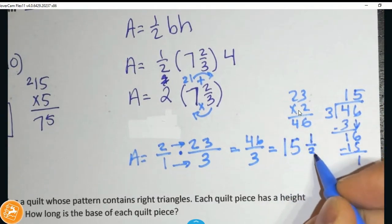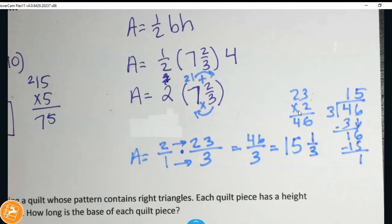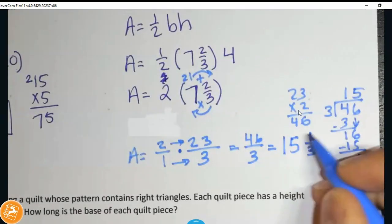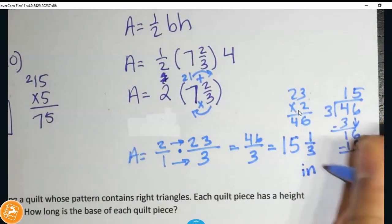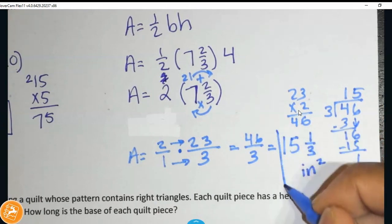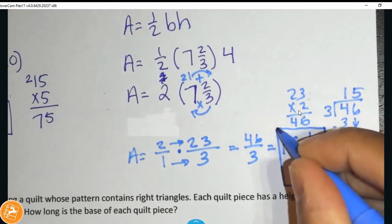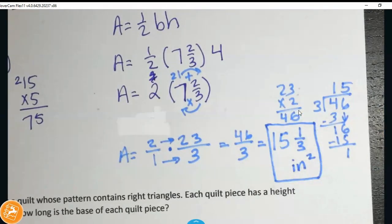And I'm going to stop there because now I have my whole number. And I have 1 left over with my 3 as my denominator. So, the area of this rectangle is 15 1/3 inches squared.